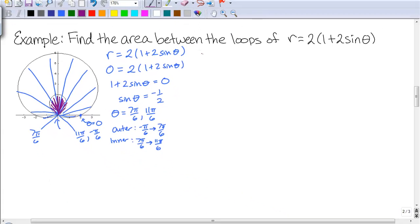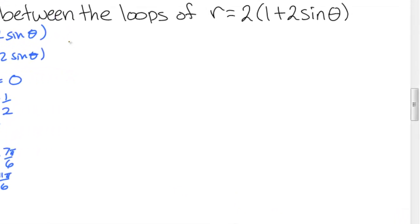So for our plan to solve this, we need to set up two parts. Our area is going to be the area of the outer loop minus the area of the inner loop. So we will use our area formula twice.